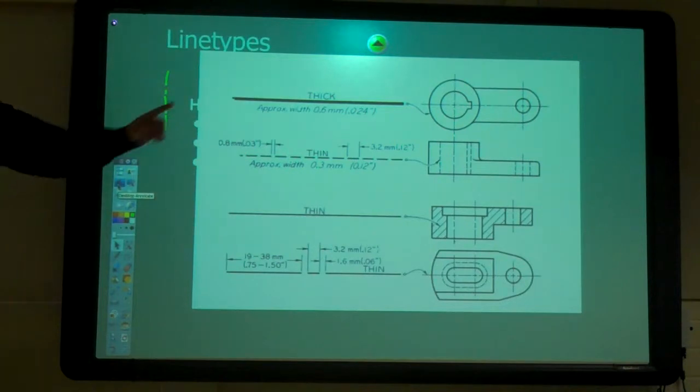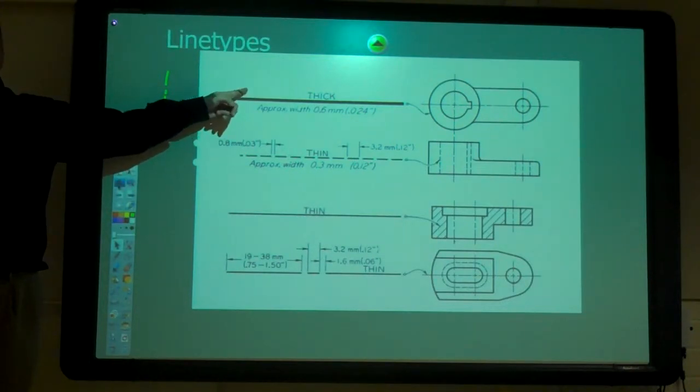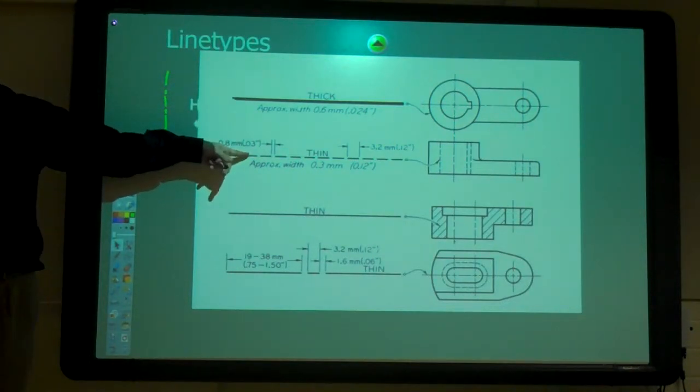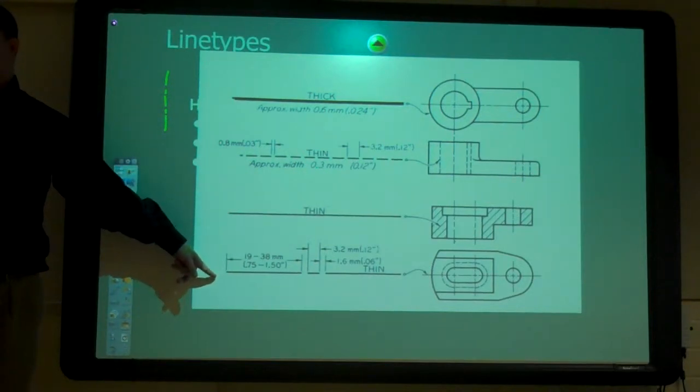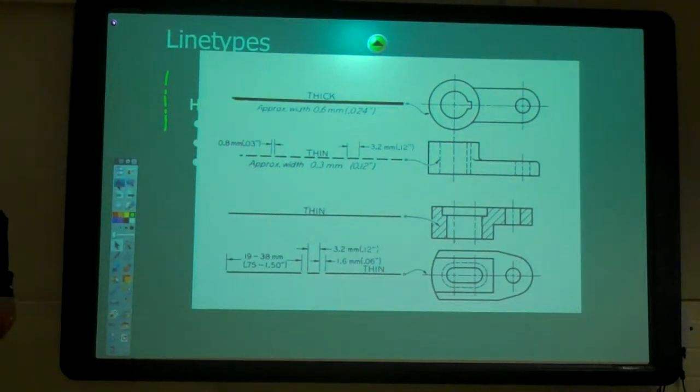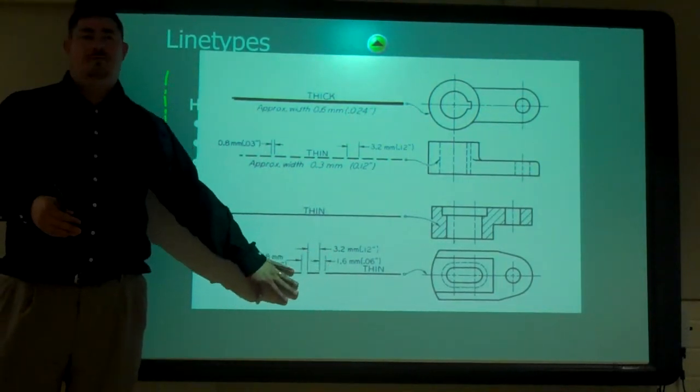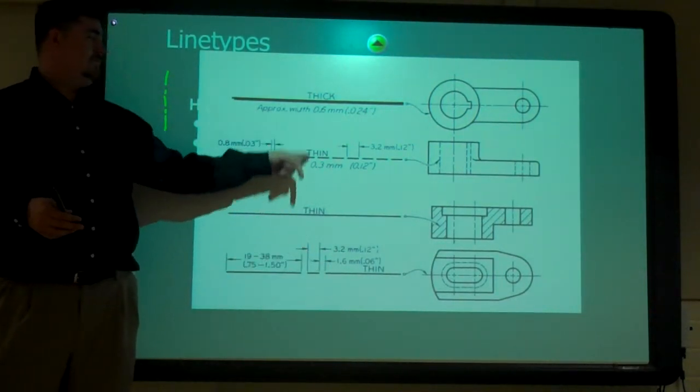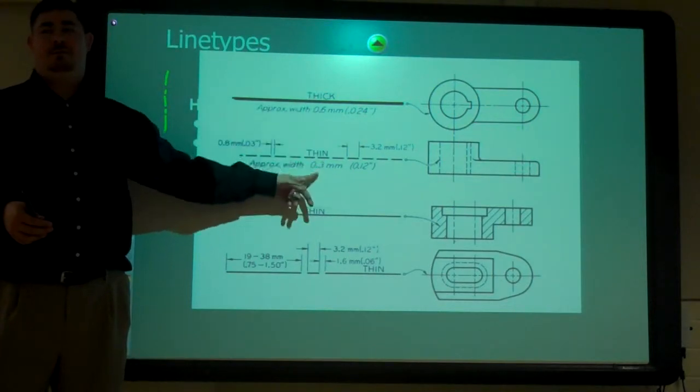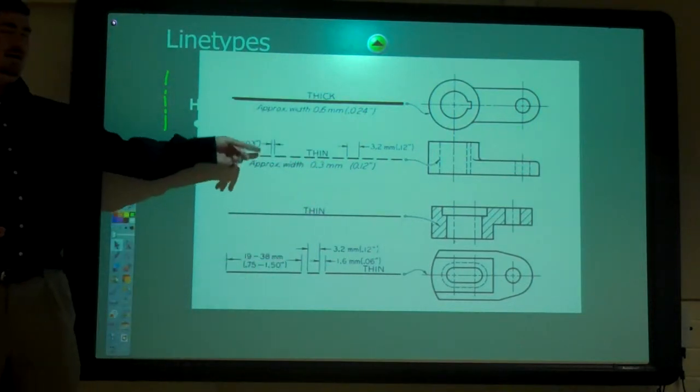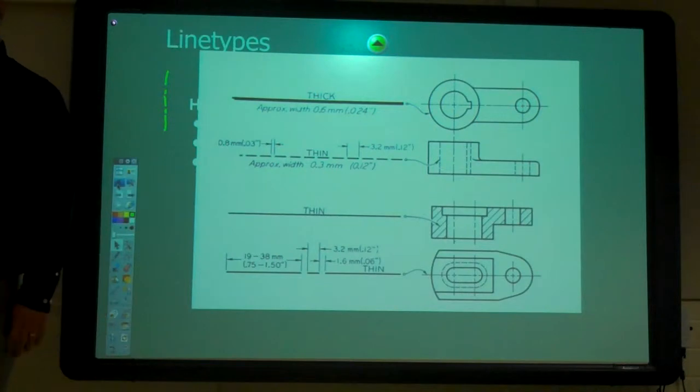I think we need our object lines, our thick lines, hidden lines for inside things, and center lines. Every part we draw is going to have those three lines. The first few weeks, we're not going to have circles, we're not going to have center lines. But after that, we're going to have these two. After the first couple weeks, we'll have center lines, hidden lines, and object lines in every drawing.